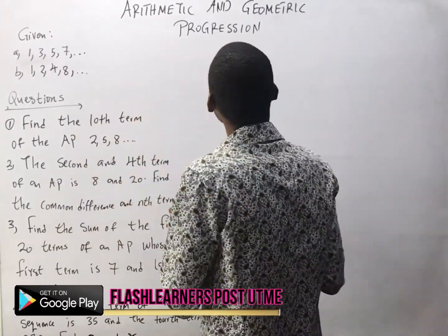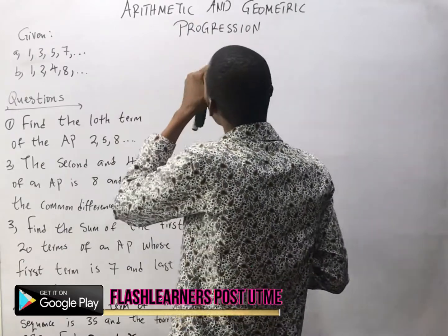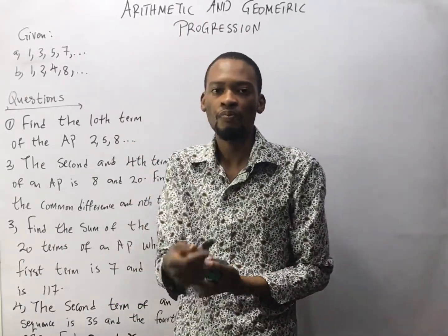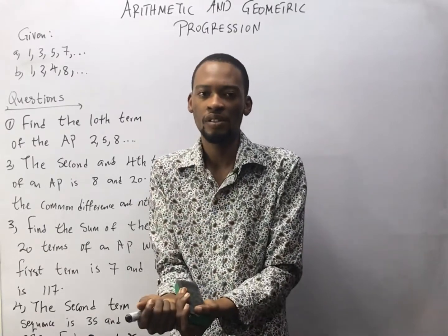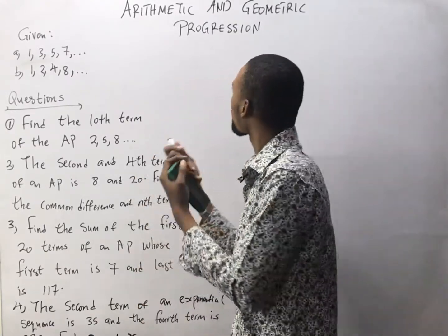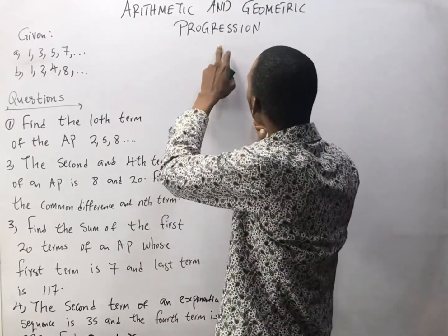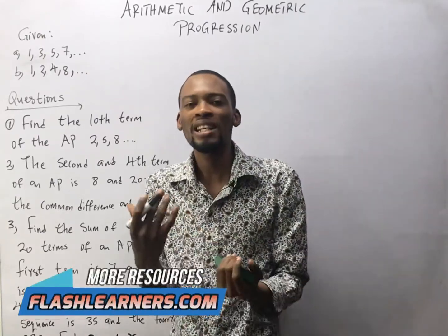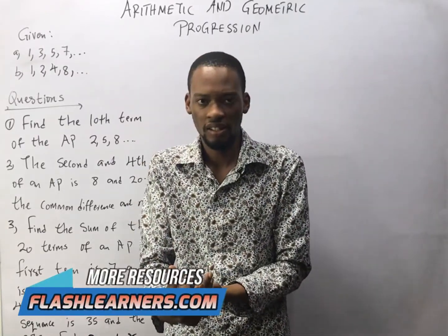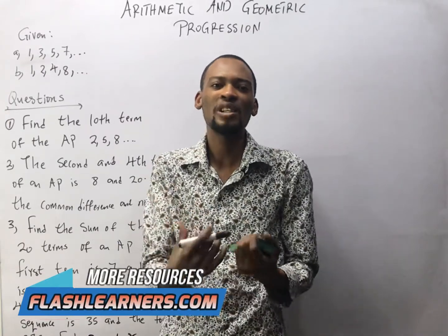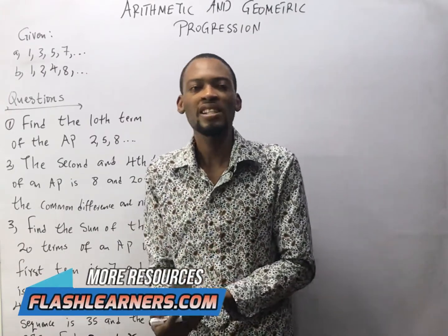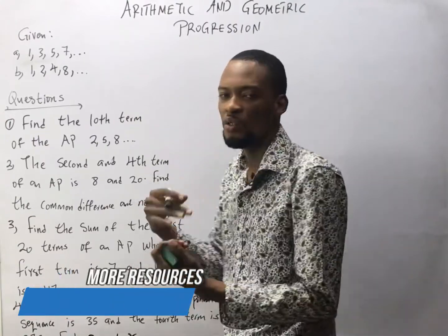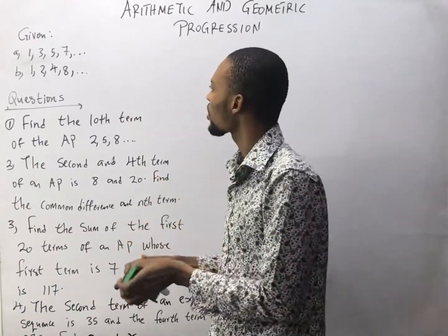AP, Arithmetic Progression, is also referred to as Linear Sequence or Linear Progression. Meanwhile, Geometric Progression, GP, is referred to as Exponential Sequence or Exponential Progression in the sense that it has powers, which you will see.